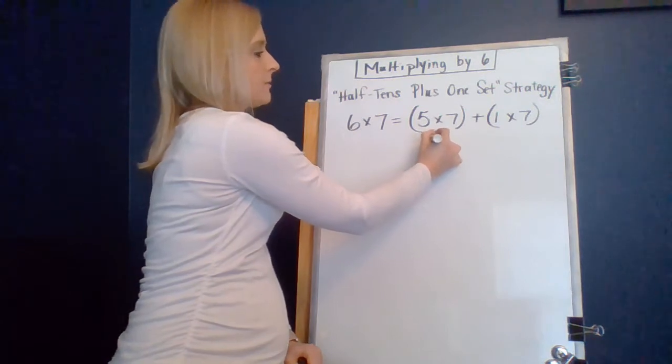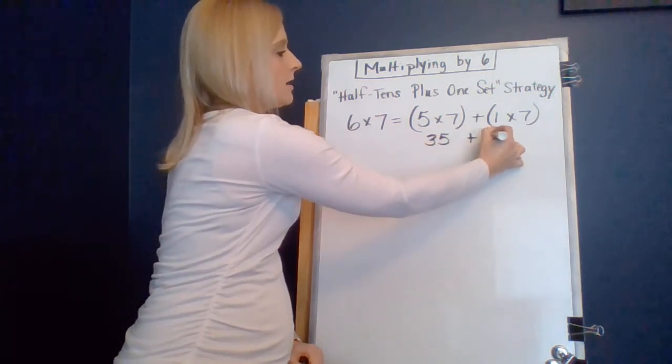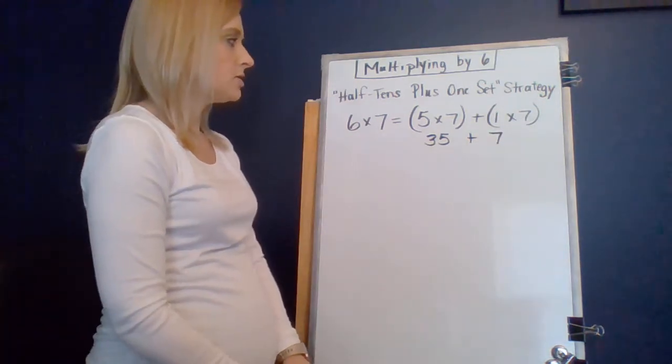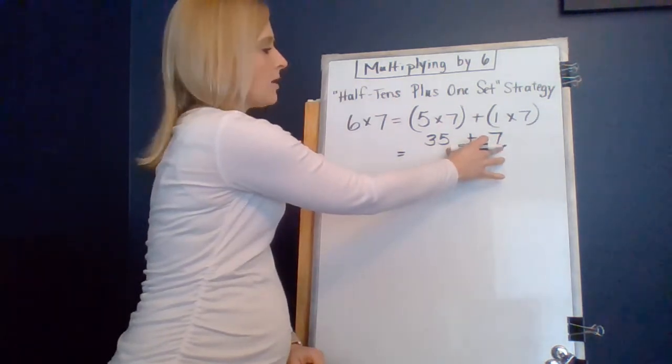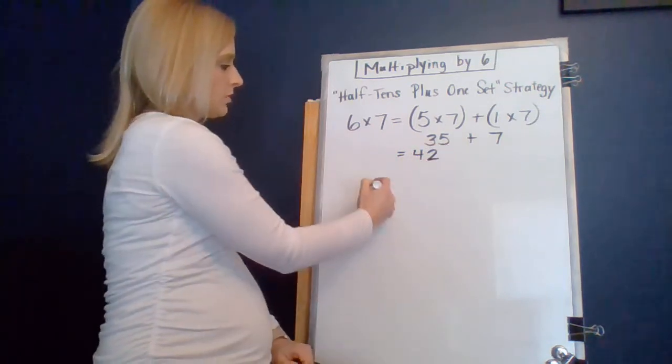So, 5 times 7, if we could count by 5 seven times, we get 35, and we add another 7 to it. Now you've got to use those addition skills and those addition strategies. So, 35 plus 7. You have the 5 and the 7, that's 12, and 12 and 30 make it 42. So, 42 is your answer.